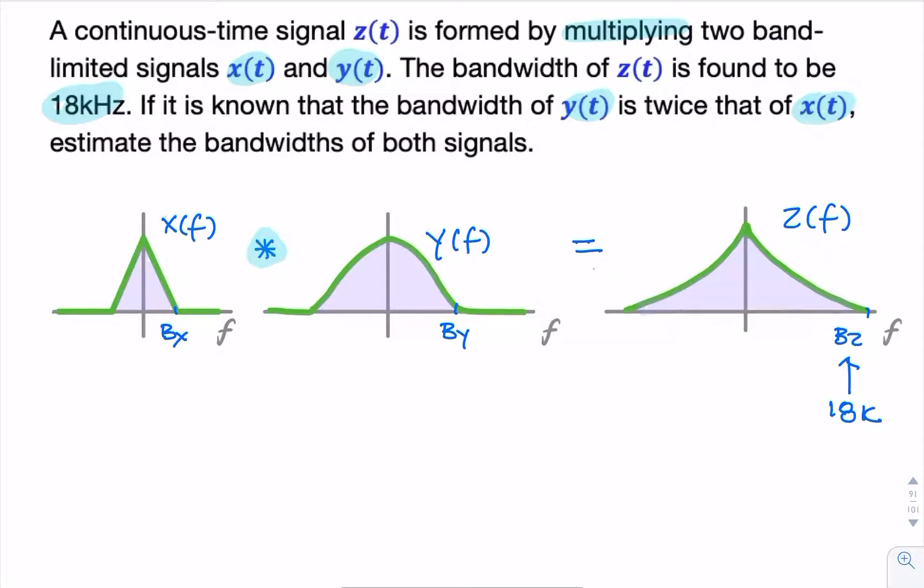we know that when we multiply two signals in the time domain, then the bandwidth of the product will be the sum of the bandwidths. So, whatever the bandwidth of x is and the bandwidth of y is, we add those up to find the bandwidth of z.